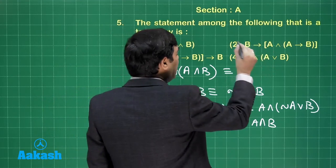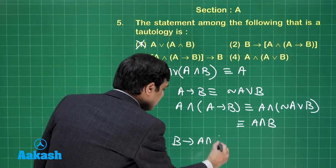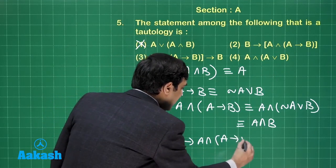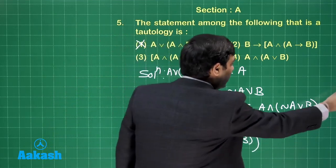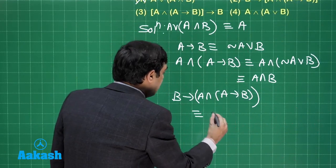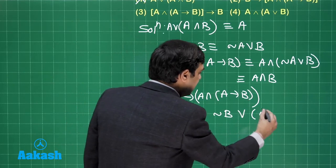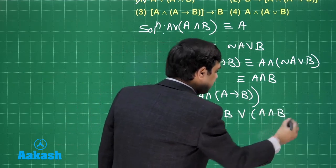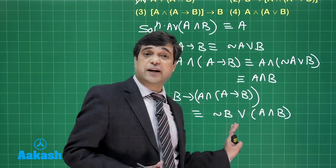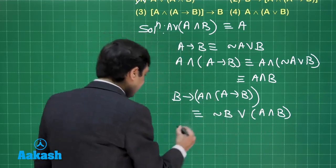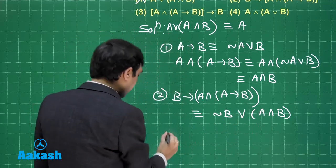Next, we are saying if B then this term. If B then A and if A then B. Now this is equivalent to negation B or A and B. Now when you put it inside you will get some dependence upon A and B. Moving to the third option, this is option number two, this is option number one and the option number three.